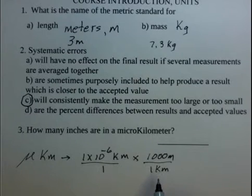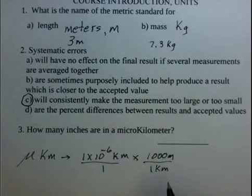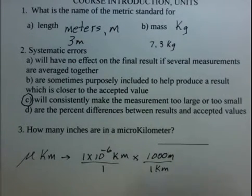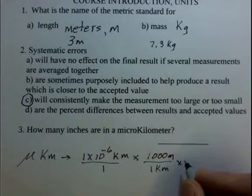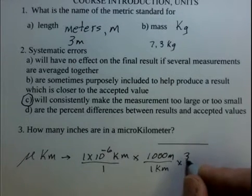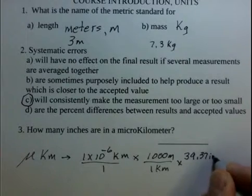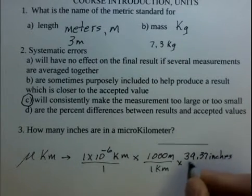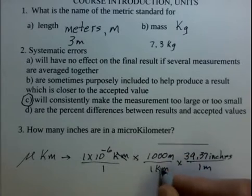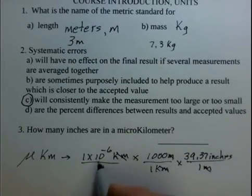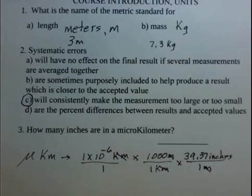A thousand meters in a kilometer. And then in the front of many books, there is a chart of conversion factors. And you may discover in your book that you have a conversion factor of 39.37 inches for one meter. So the kilometers have canceled. The meters have canceled. We're left with inches. The micro was taken care of by the ten to the minus six.